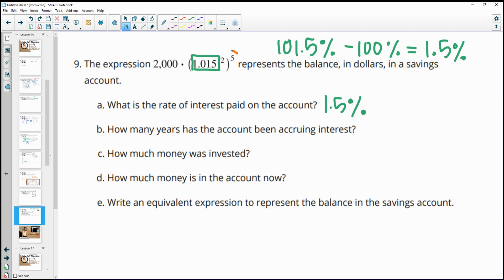Then how many years has the account been accruing interest? And so that's going to be this number, five. So five years. And then how much money was invested? So here's our initial investment. So that's going to be 2,000.